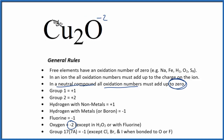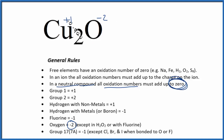That means we're going to have to have a plus two over here. So two times plus one will give us plus two — these will cancel out and this will be a neutral compound. All the oxidation numbers add up to zero: two times plus one is two, and minus two gives zero. So these are the oxidation numbers for Cu2O. Note that this plus one is for each copper — there are two coppers, and each one has a plus one oxidation number.